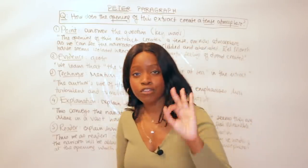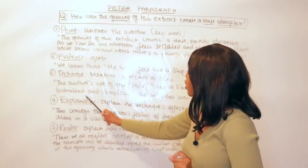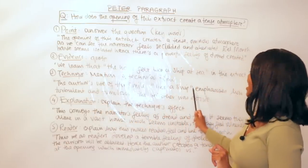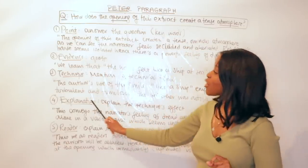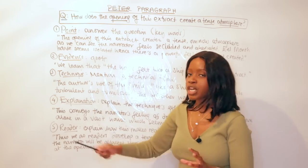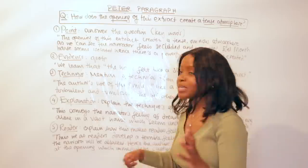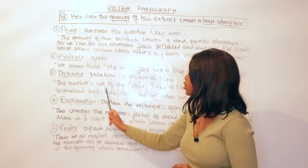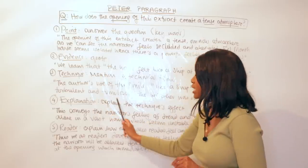So now let's look at how I've talked about technique here: The author's use of the simile 'like a ship' emphasizes how turbulent and tumultuous—turbulent means violent, tumultuous means unpredictable—the weather was outside. So: the author's use of the simile 'like a ship' emphasizes how turbulent and tumultuous the weather was outside.